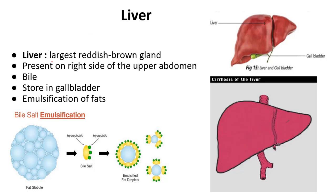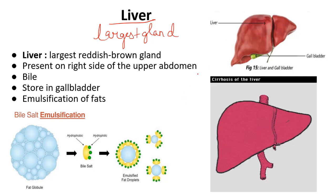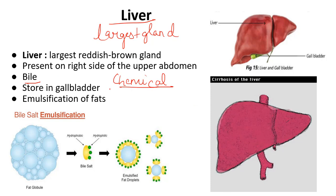Liver is the largest reddish-brown gland in your body. Please remember this point — liver is the largest gland in your body. It is reddish-brown in colour and located on the right side in your abdominal region. The juice which liver secretes is called bile. This bile comes to the small intestine and then the small intestine can perform its function.